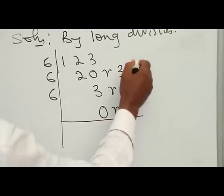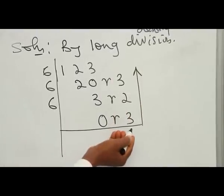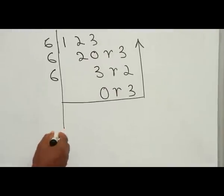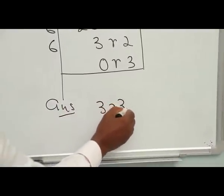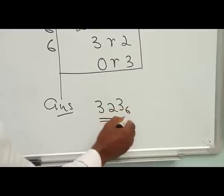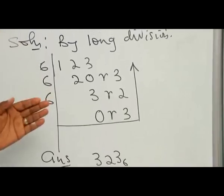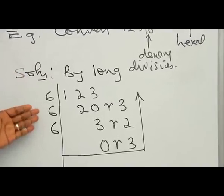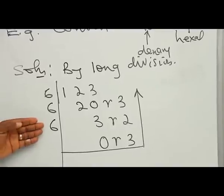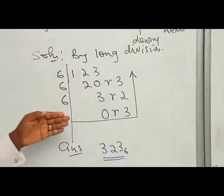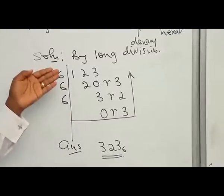You rule across and then up, indicating with an arrow to show that you read the answer from the bottom to the top. So the final answer is therefore equal to 323 and this is in base 6. Any conversion from base 10 to any base, you simply carry out the division of the number in base 10 by the base number you are converting to. At each point of division you pull down the remainder, and at the end you write your answer from the bottom to the top.